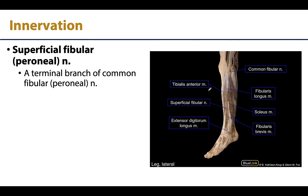This compartment is entirely innervated by the superficial fibular or peroneal nerve, which is one of the terminal branches of the common fibular or peroneal nerve. The common fibular nerve comes down from the popliteal fossa and wraps around the neck of the fibula in a fairly subcutaneous location, making it less protected and vulnerable to direct trauma in that region. The common fibular nerve gives off the superficial fibular, which supplies the lateral compartment, and the deep fibular or peroneal nerve, which supplies the anterior compartment.